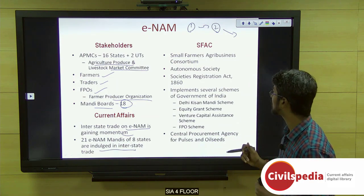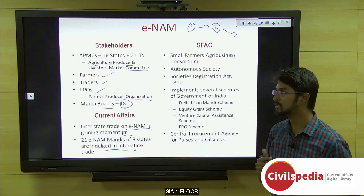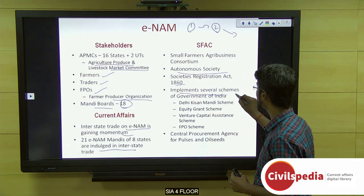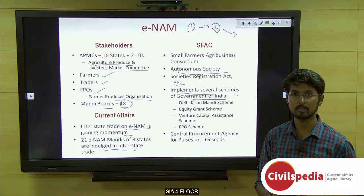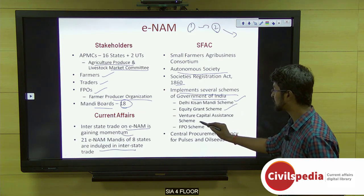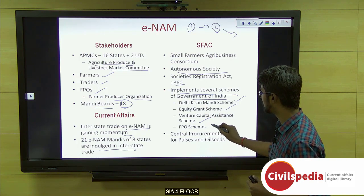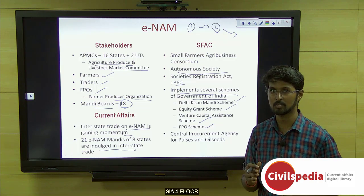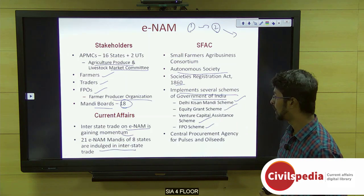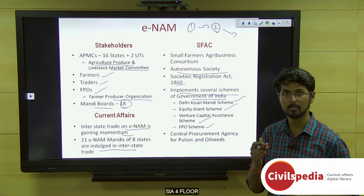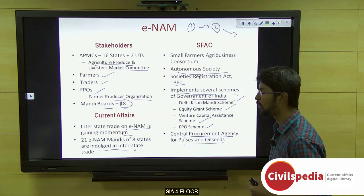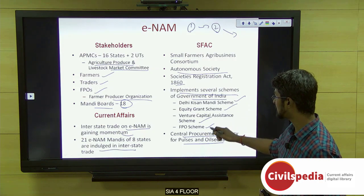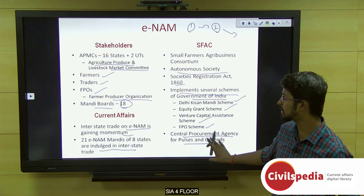You need to know about the implementer, the Small Farmers Agribusiness Consortium. It was formed as an autonomous society under the Societies Registration Act of 1860. SFAC implements several government schemes including the Delhi Kisan Mandi scheme, equity grant scheme for farmers, venture capital assistance scheme for farmers, and the Farmer Producer Organization scheme. Notably, SFAC is the central procurement agency for pulses and oil seeds, similar to how the Food Corporation of India procures cereals like rice and wheat.